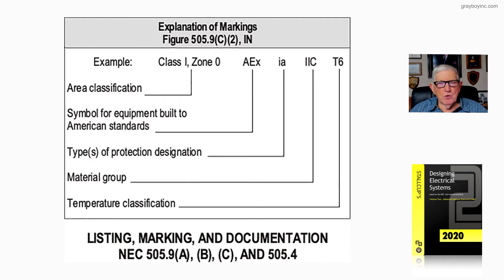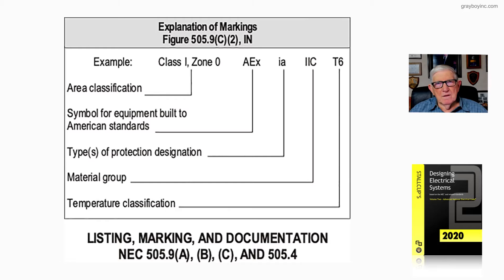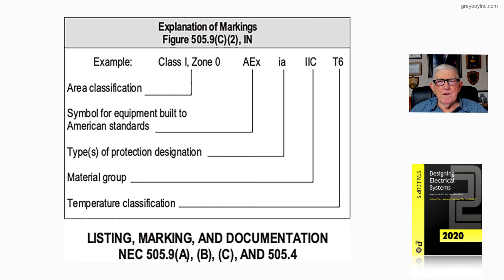Now let's look at figure 21-69, which basically deals with listing, marking, and documentation in accordance with NEC 505.9abc as well as 505.4. We have an example here of these markings — this is figure 505.9c2 informational note.